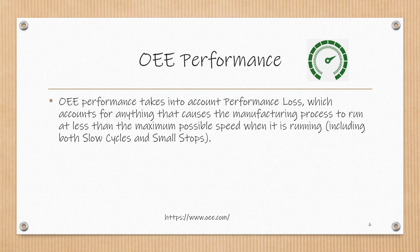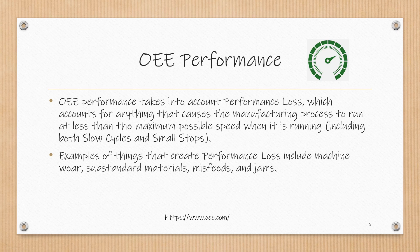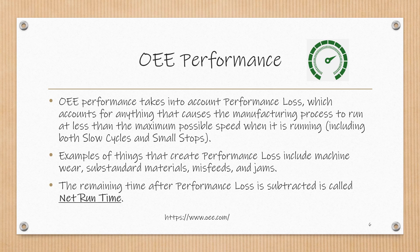OEE performance takes into account performance loss, which accounts for anything that causes the manufacturing process to run at less than the maximum possible speed when it is running, including both slow cycles and small stops. Examples of things that create performance loss include machine wear, substandard materials, misfeeds, and jams. The remaining time after performance loss is subtracted is called net runtime.